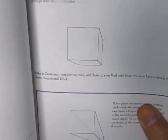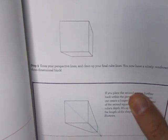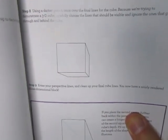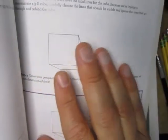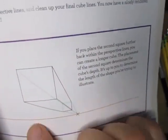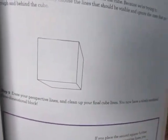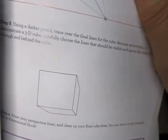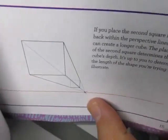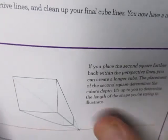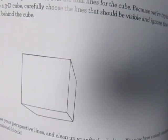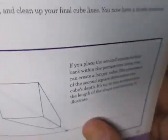And then step nine - erase your perspective lines, clean up your final cube lines. You know, have a nicely rendered three-dimensional block. Well, a lot of these times I've drawn these so many times, three dimensional blocks, that I don't go through the effort of doing all this. I just kind of eyeball it, and I've done it so many times where I can do it without the vanishing point, although it's not as accurate if you used a vanishing point line.